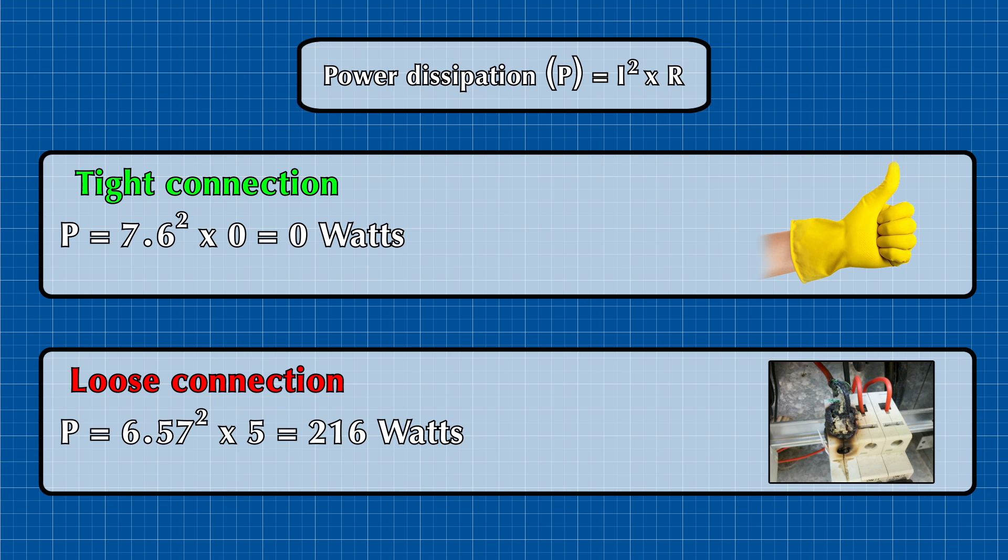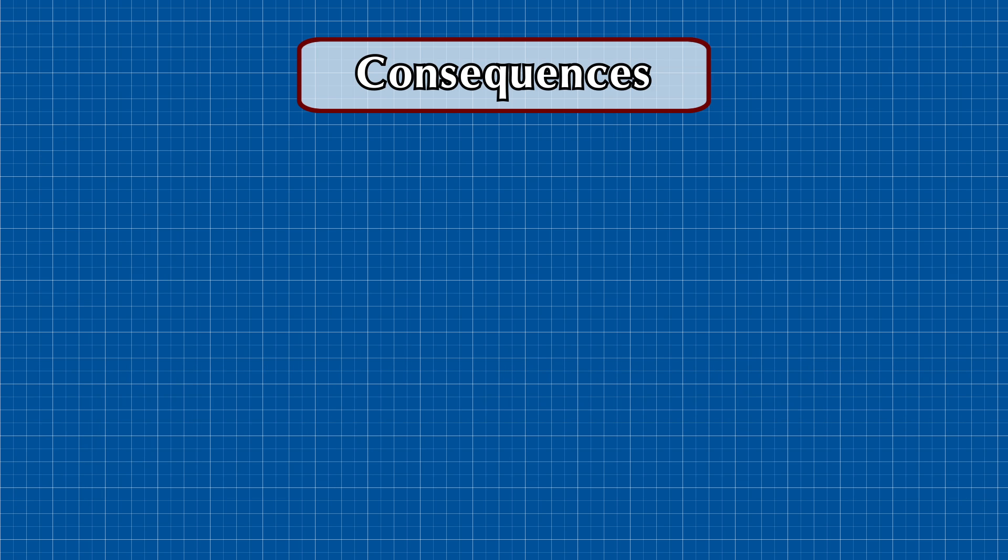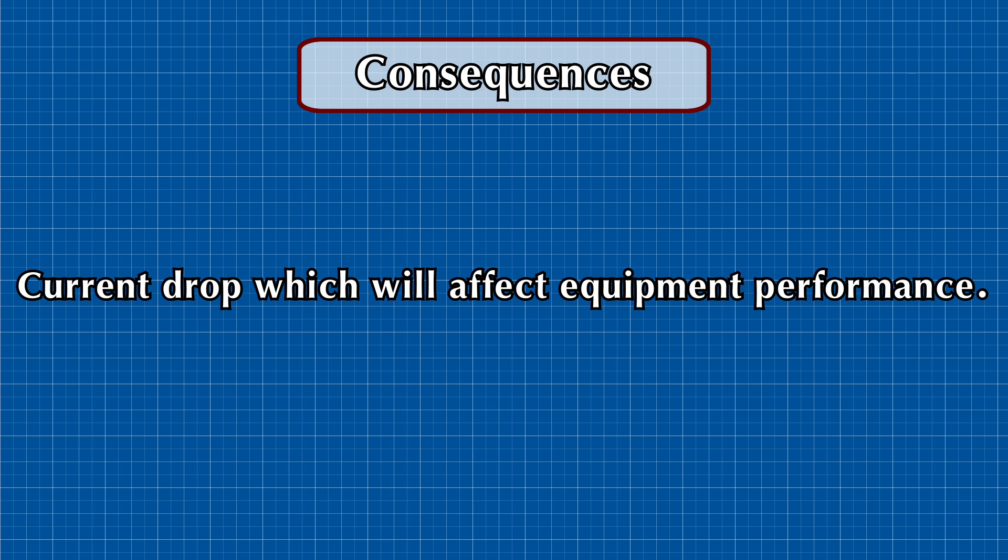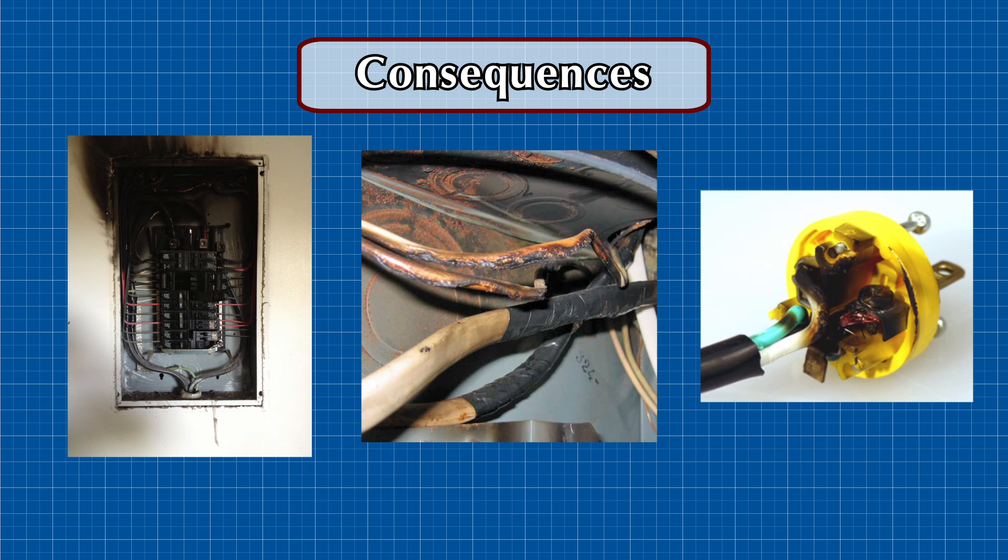And this is the reason behind why loose connections generate heat. The consequences are that this heat in connections may affect the operation of the equipment due to the drop in current, and this heat will eventually burn the connection or melt the insulation of the cables and all sorts of bad stuff.